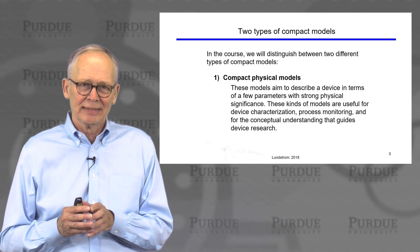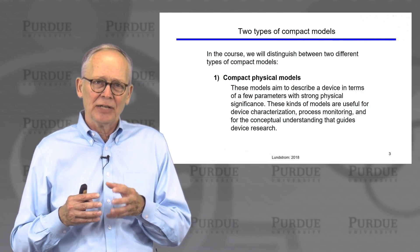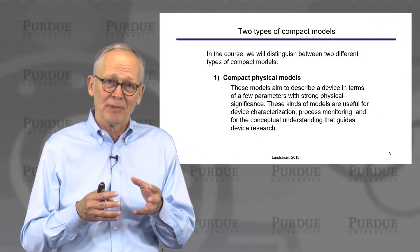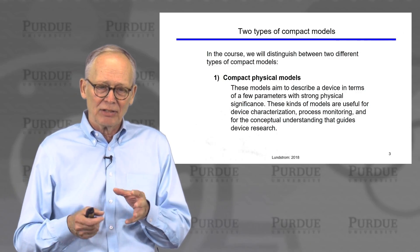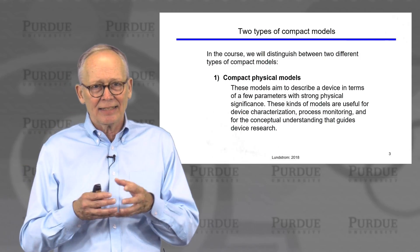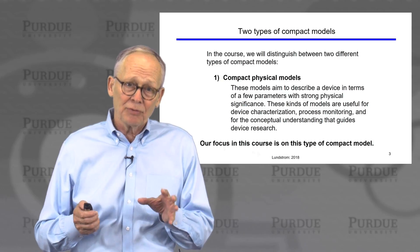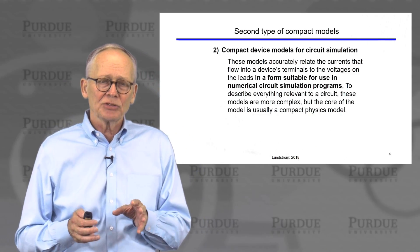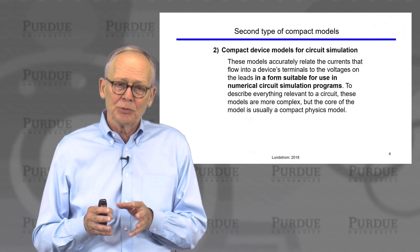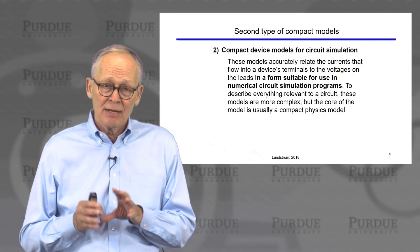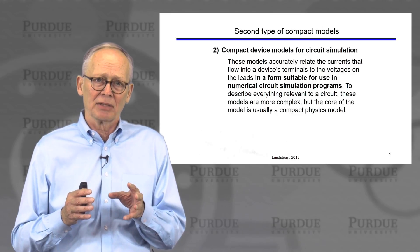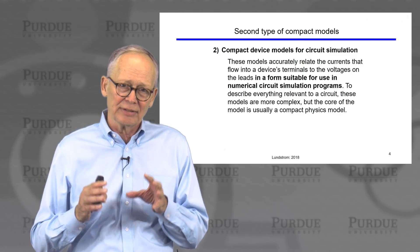We're going to distinguish between two different types. One is a compact physical model - that's what this course is all about. A simple physical way to understand the essential physics of a MOSFET in terms of a few simple equations. We're not necessarily going to be able to use this model for circuit analysis. But there are also these compact models for circuit simulation that accurately describe the IV characteristics of transistors in a form suitable for use in numerical simulation programs. Very frequently, the core part of this model is a very physical compact model, and then complexities are added to that simple core model.